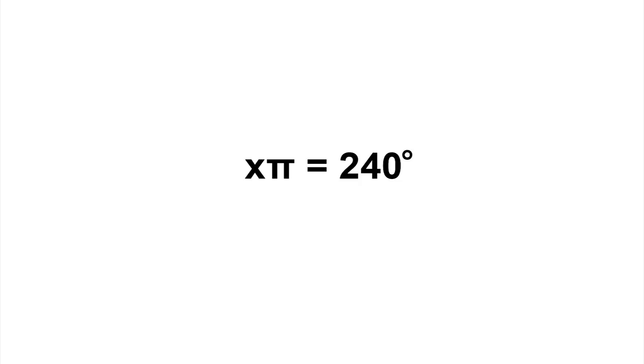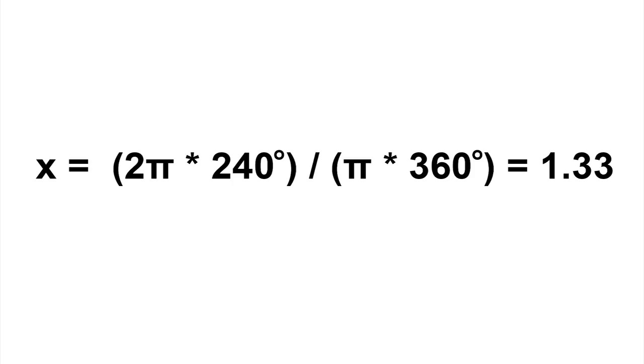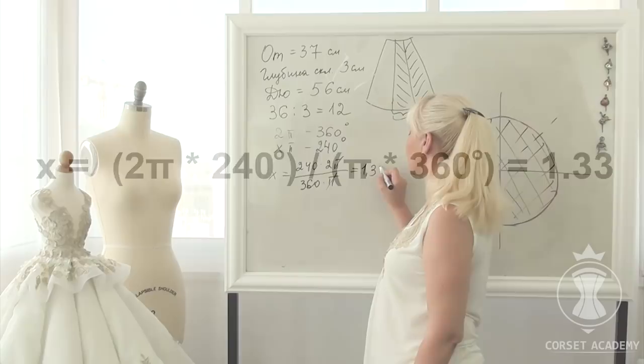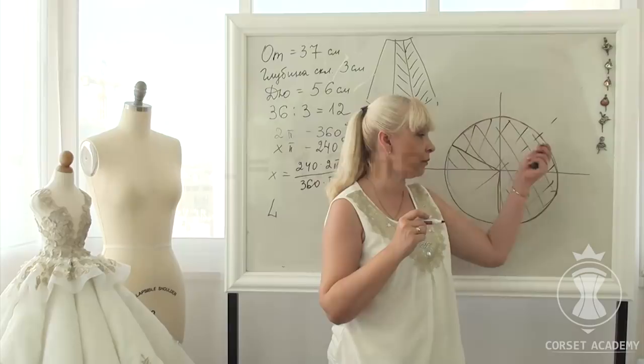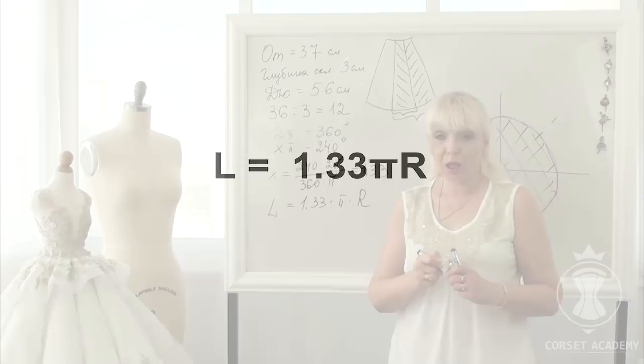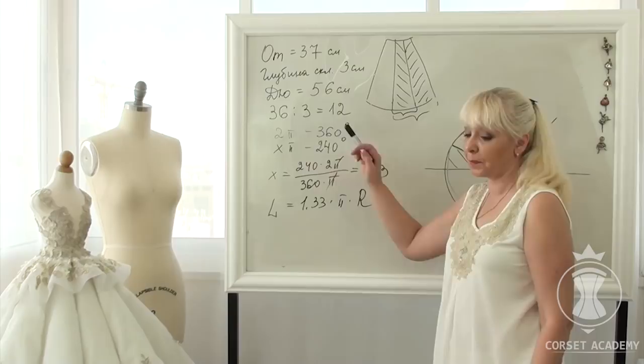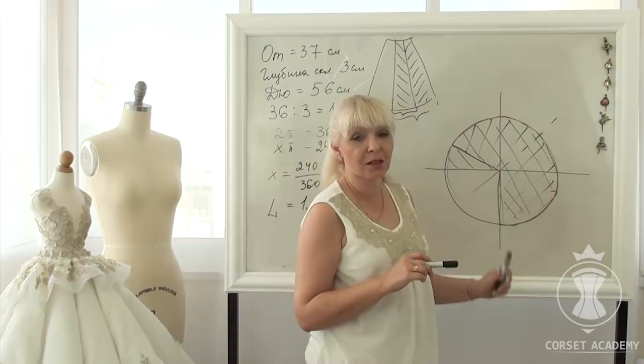Take a look at the new equation: 2 pi equals 360 degrees, X pi equals 240 degrees. Wherefore, x equals 2 pi times 240 degrees divided by pi times 360 degrees equals 1.33. Thus, the length of 2/3 of the circle or the length of the bottom edge of our 2/3 circle skirt will be calculated as L equals 1.33 pi r. This suggested method allows you to draft skirt patterns based on any part of a circle and calculate the corresponding hem length.